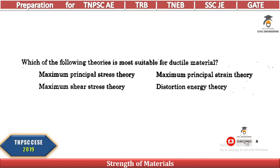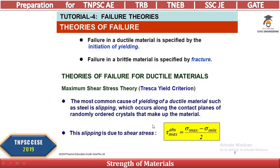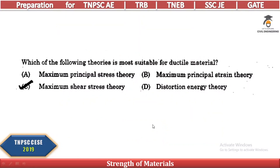Which of the following theories is most suitable for ductile material? There are four or five theories of failure. For ductile materials, the most suitable theory is the maximum shear stress theory. The answer is maximum shear stress theory.